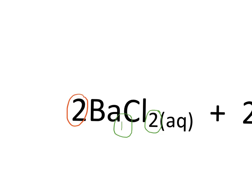Now this is a compound — the compound is BaCl₂ — and we want to figure out how many atoms of Ba are in this compound, and how many atoms of Cl are in this compound. We do that by taking the coefficient and multiplying it by the subscript. The coefficient for this entire compound is two.